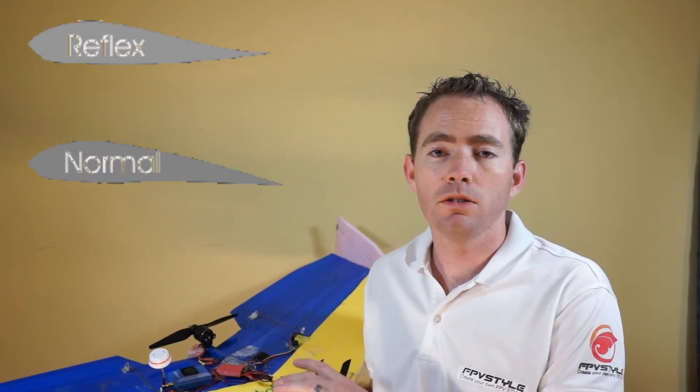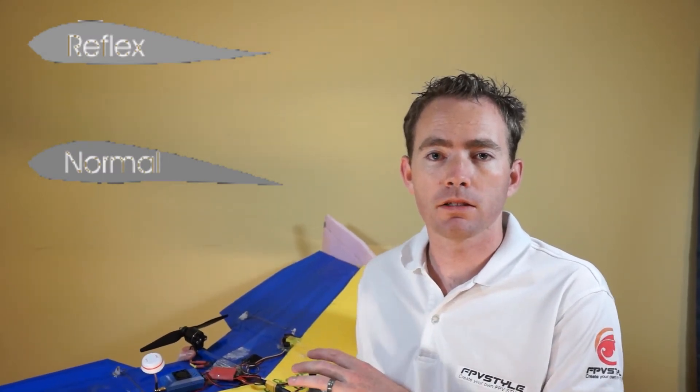Now cores that are already cut, like the Buffalo from FPVStyle.com or any of the Zeta aircraft or any of your other flying wing companies, they actually form it into the airfoil to have reflex already.